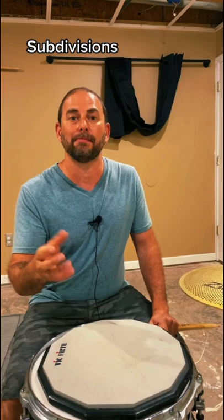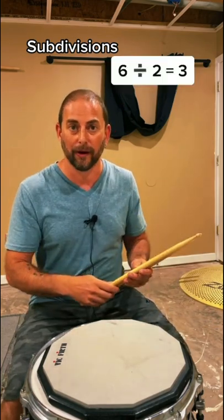So if you divide the 6 by 2, you get two groups of 3, right? 2 times 3 equals 6.